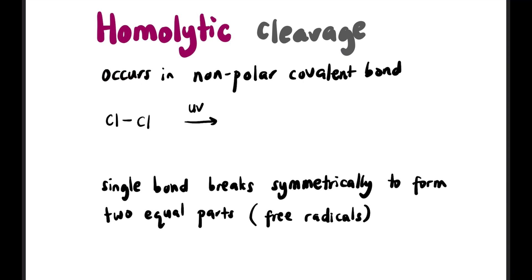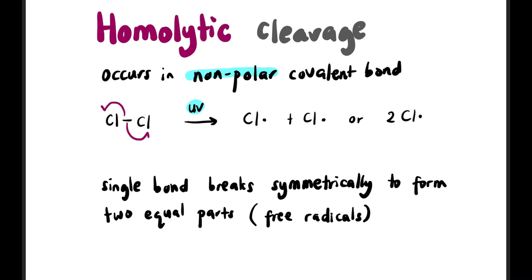Homolytic cleavage occurs in non-polar covalent bonds — for example, Cl–Cl, and there must be UV light. The bonded electrons in the middle break equally, one going to the left Cl and one going to the right Cl, producing two Cl dot (two Cl•). What happens is a single bond breaks symmetrically to form two equal parts, called free radicals.